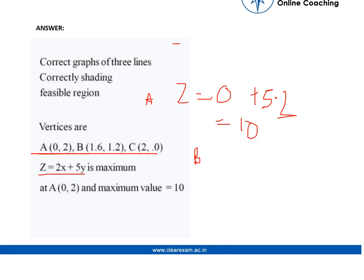At B, that is point (1.6, 1.2), z equals 2 into 1.6 plus 5 into 1.2. So 2 into 1.6 is 3.2, 5 into 1.2 is 6, so it is 9.2.